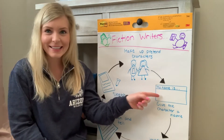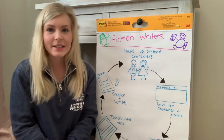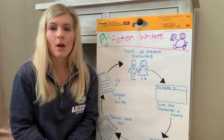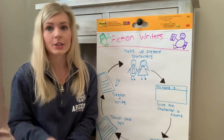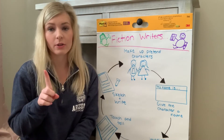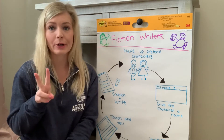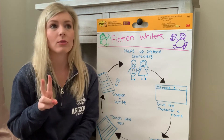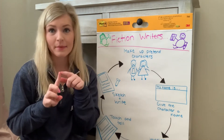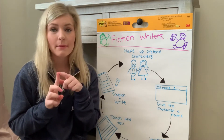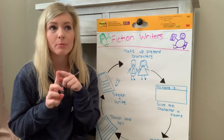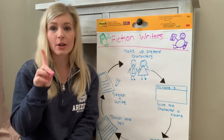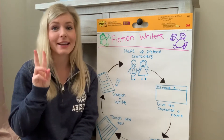The second thing that fiction writers do is they give their characters a name. I already knew that my two characters were a little girl and a bird. I think I'm going to name my little girl Gretchen and I'm going to name her friend the bird Phillip. So my characters' names are Gretchen and Phillip.